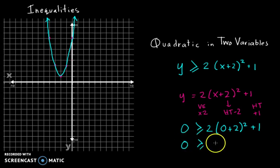0 is greater than or equal to. Let me see. That's 2 squared, 4 times 2 is 8. 8 plus 1. That's 9. So is 0 greater than or equal to 9? And I would say, not true. This is not true. I cannot.